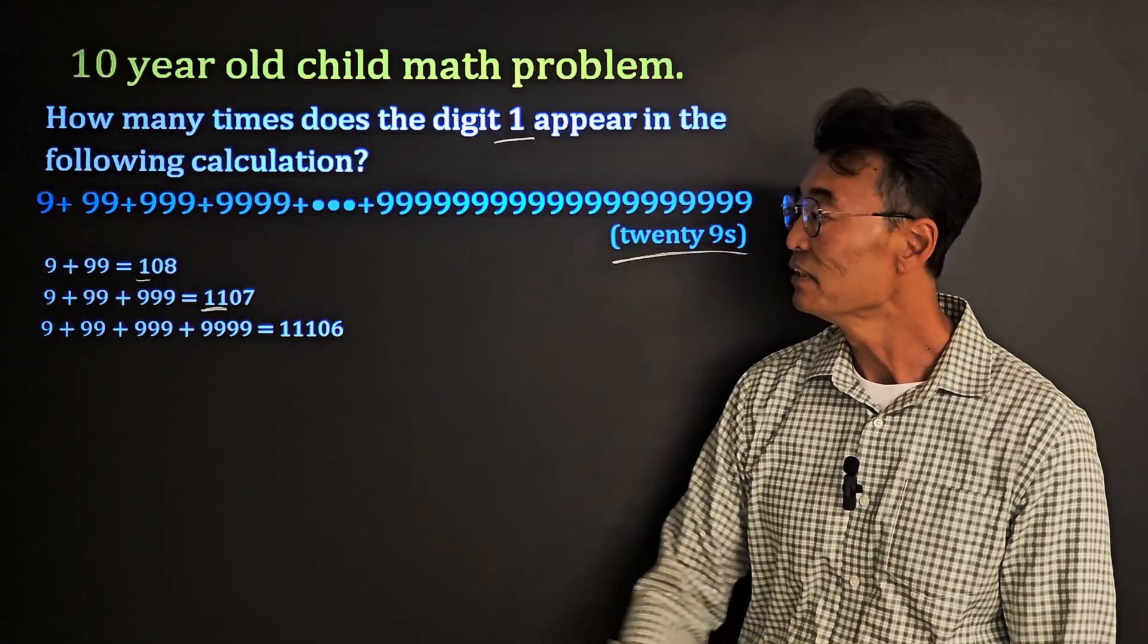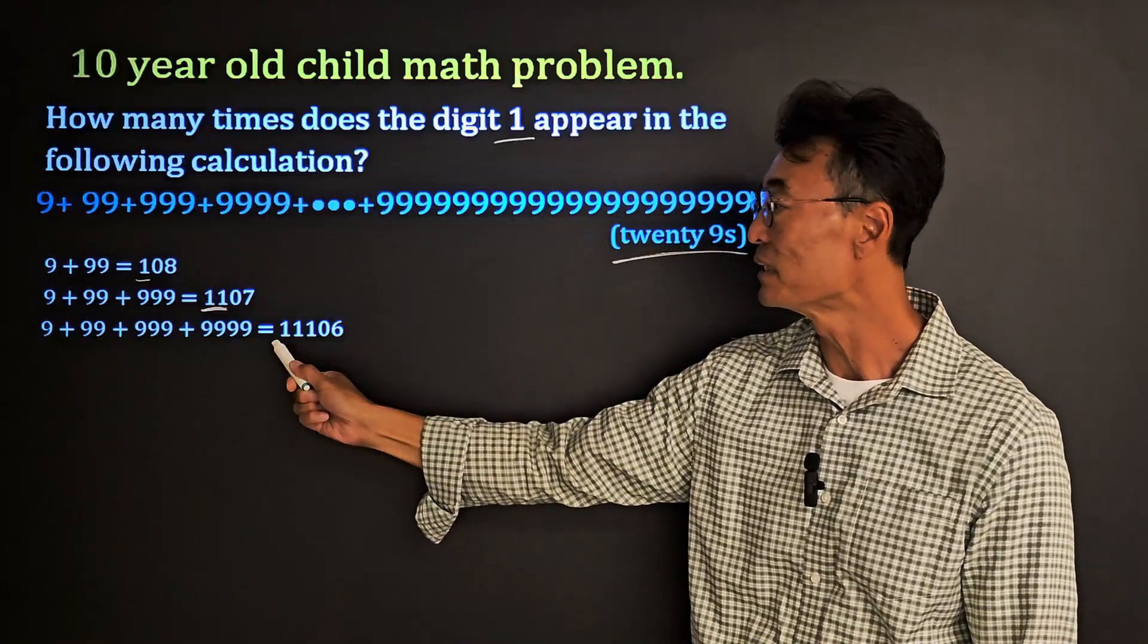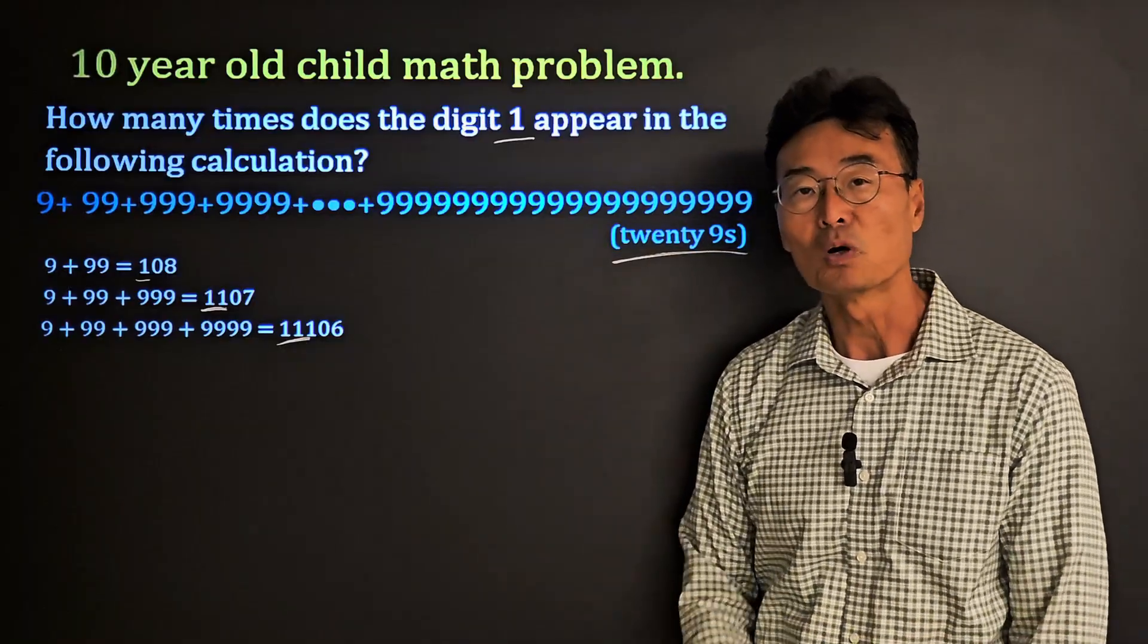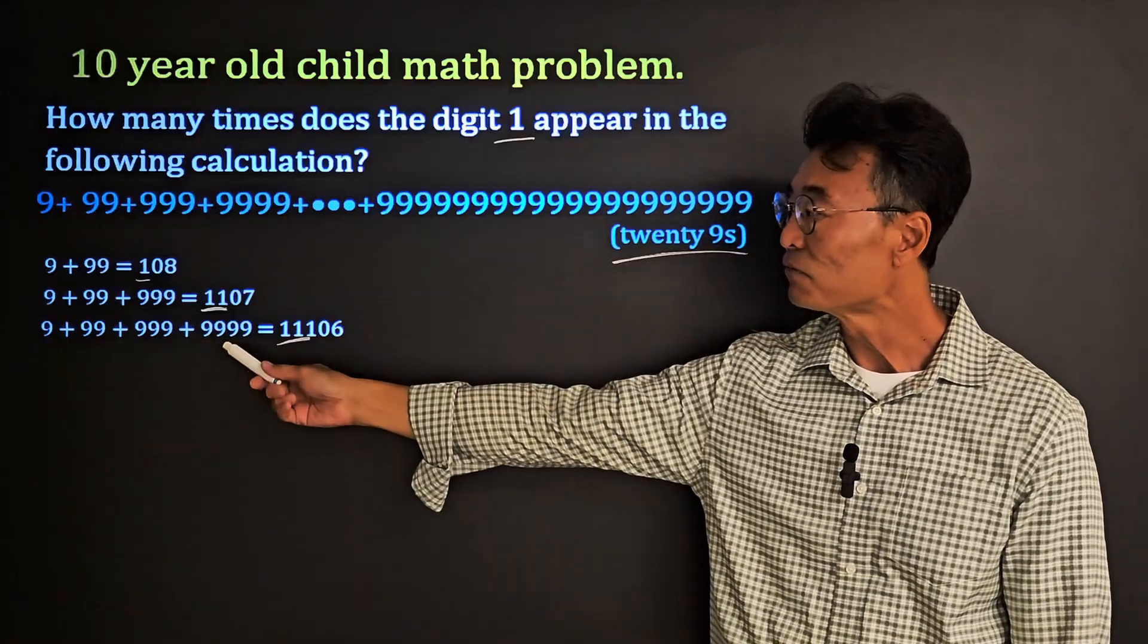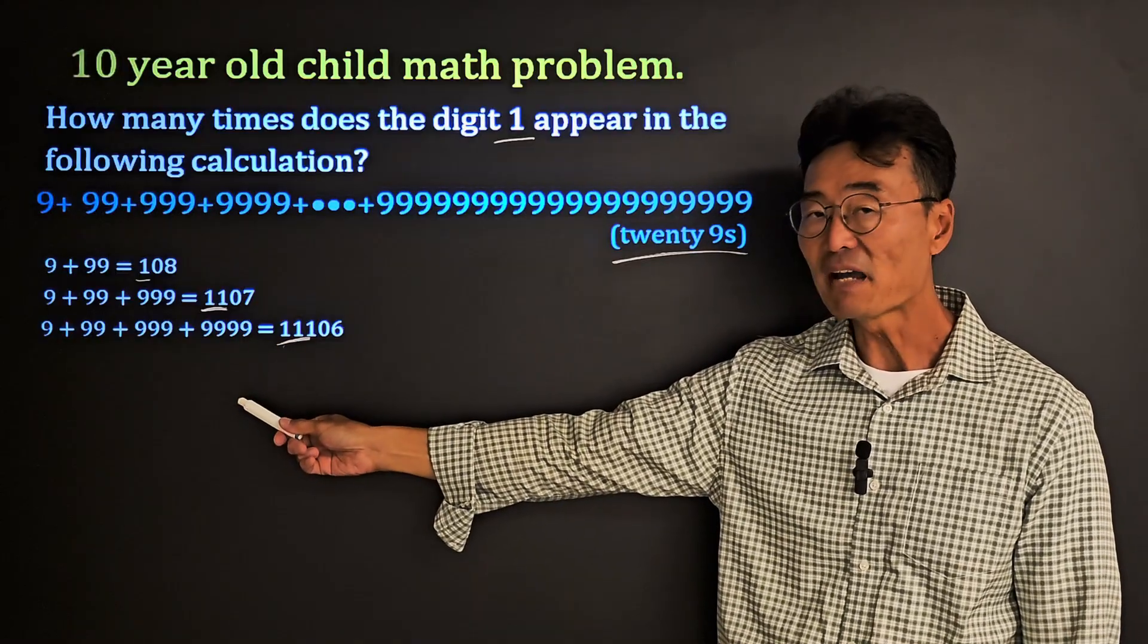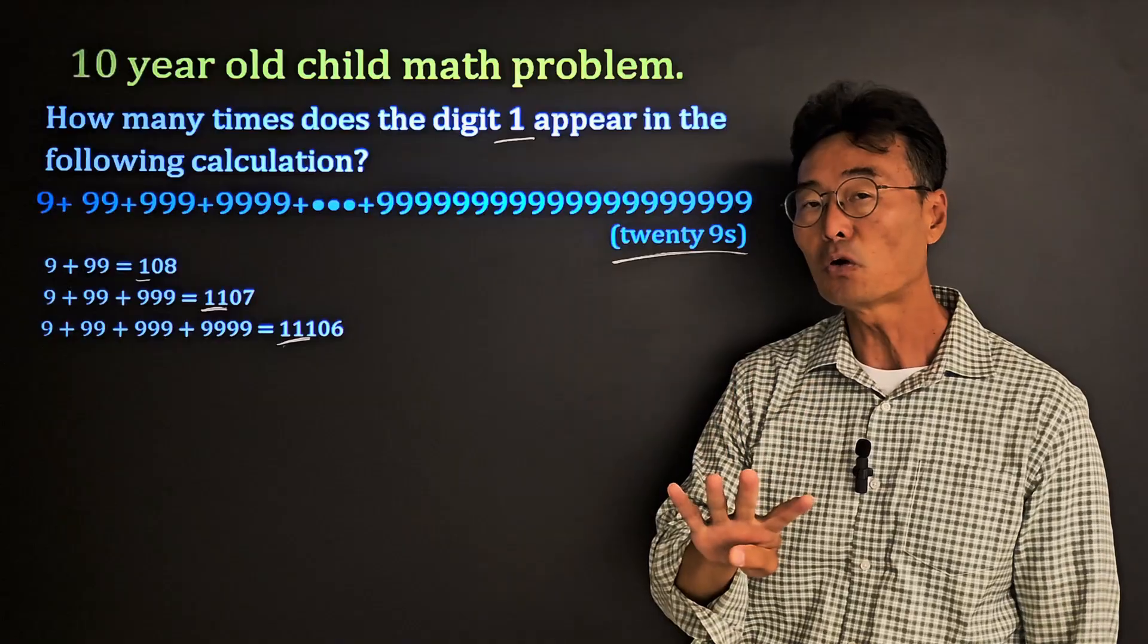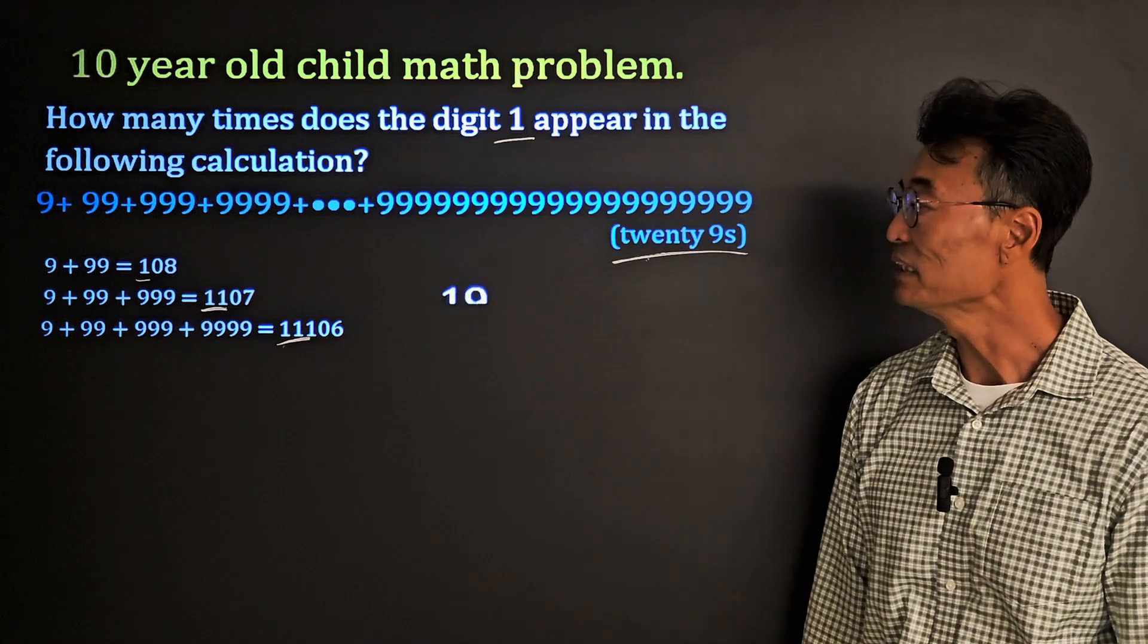Let's do one more and see if this works again. So if we add the first four numbers we get 11,106, we get three ones. So we're thinking we got this: if we add four numbers we get three ones, if we add five numbers we're going to get four ones, if we add 20 numbers we're going to get 19 ones. Problem solved!